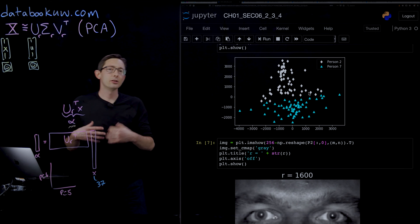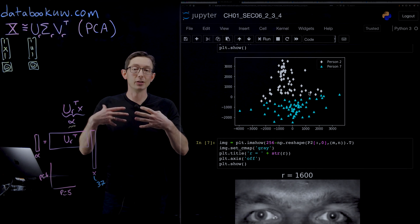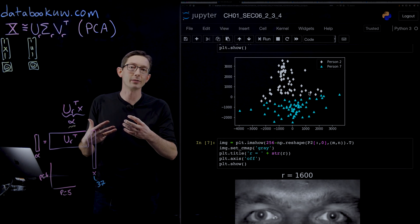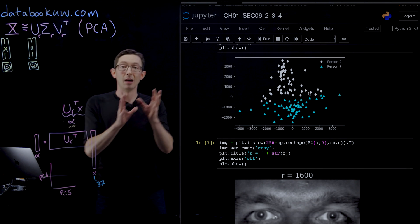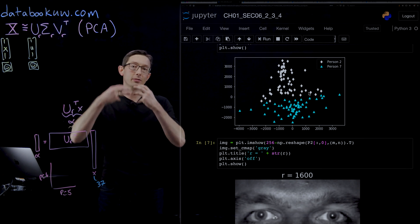The first two principal components, at least with faces, generally encode all of the information that is the same among all people. All of us basically have an oval and eyes and a nose and a mouth.